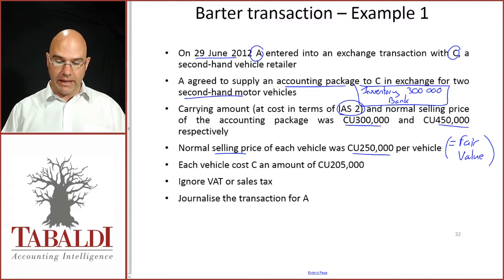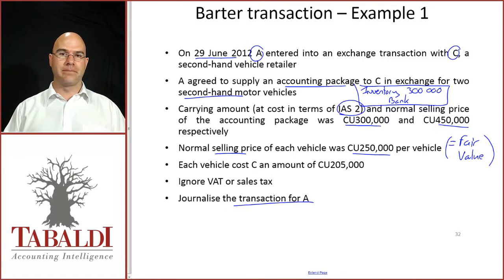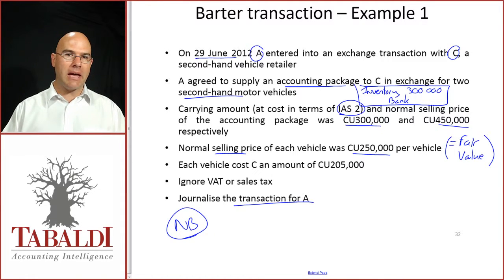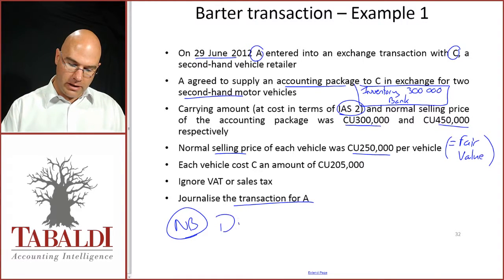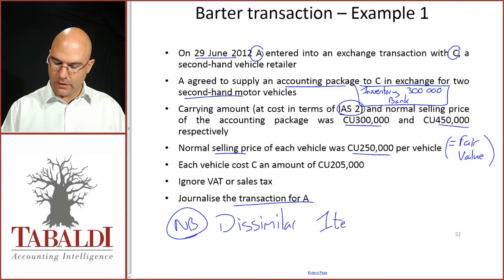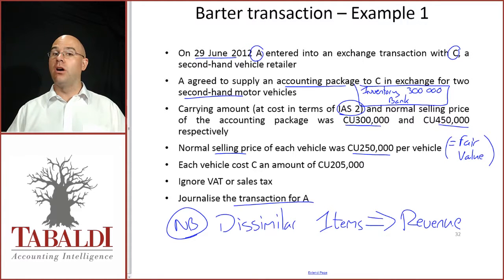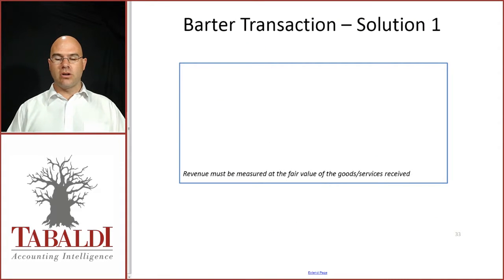Each vehicle costs C an amount of $205,000 currency units. Ignore VAT or sales tax, and I want you to journalize the transaction for A. The most important thing here is that an accounting package is not similar in any way to motor vehicles. So this is an exchange of dissimilar items, which means that we will have revenue — assuming the accounting packages are what we normally trade in our ordinary course as A. So, barter transaction.